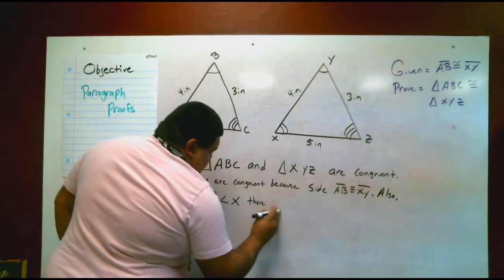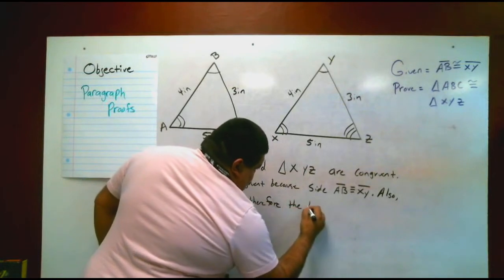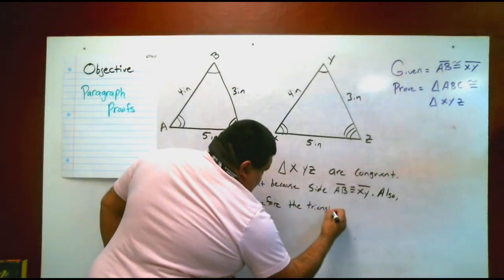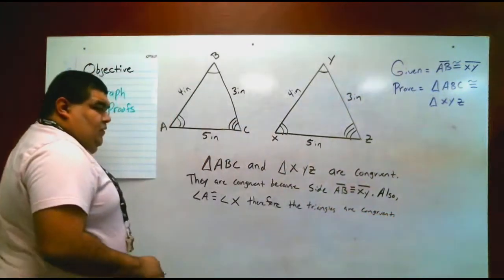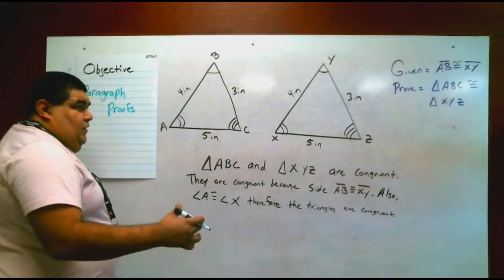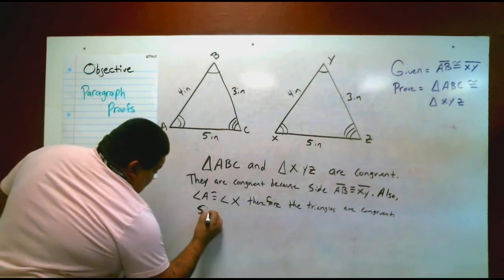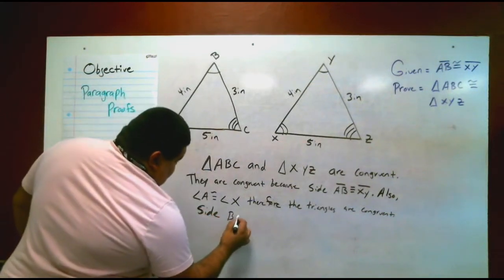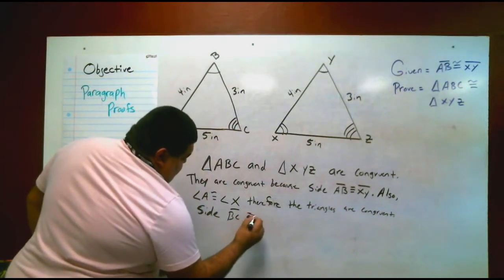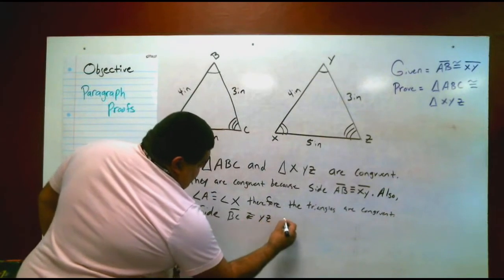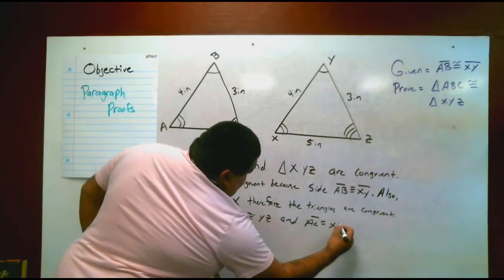Therefore the triangles are congruent. We can also say side BC is congruent to YC and AC is congruent to XC.